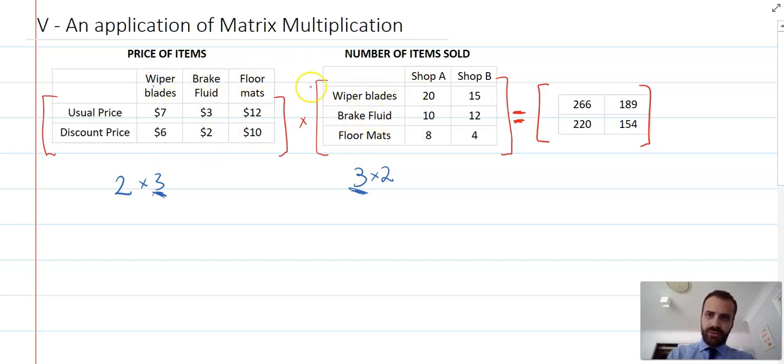They're the same, right? Wipers, brake, floor. Wiper, brake, floor. That's why we can multiply these together. Not only does the number of those represent the same, but also the actual labels on them are the same.